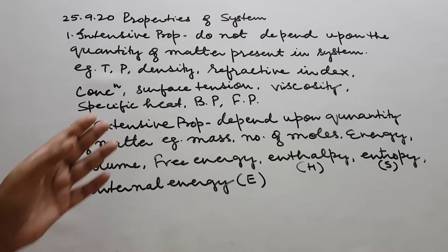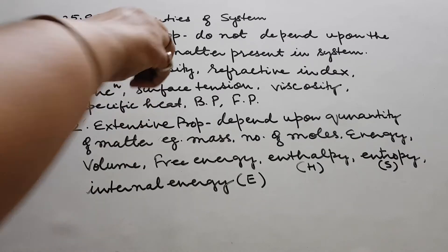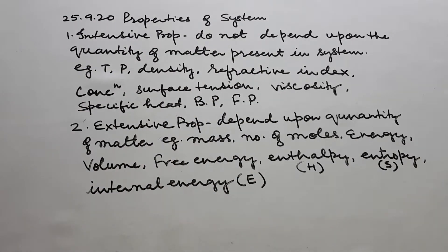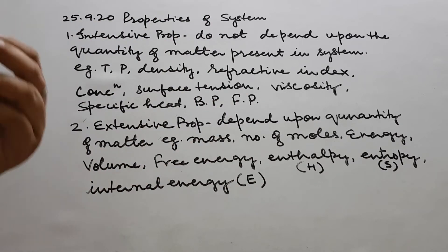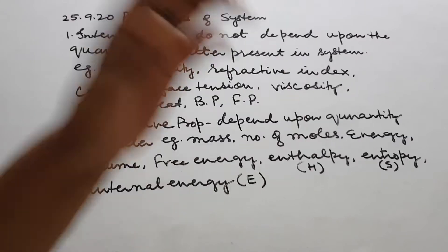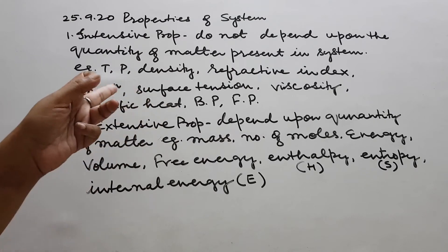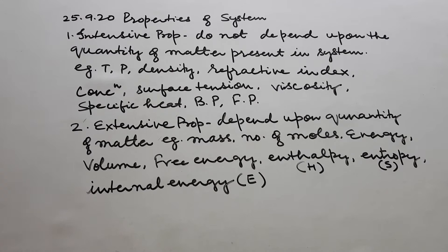Then we come to extensive properties. These depend upon the quantity of matter. Example: mass itself — take more, it will be more; take less, it will be less. Then number of moles: more the amount, more the number of moles. Because all energies — except specific heat — are extensive properties, as they all depend upon the mass.